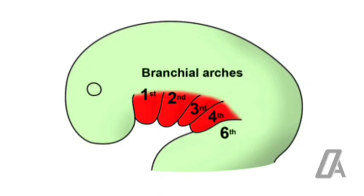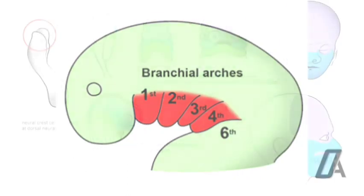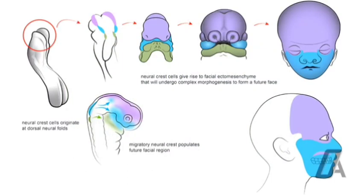The mandible is derived from the first branchial arch, which is called the mandibular arch. Branchial arches are bilateral mesodermal swellings that start developing at about the fourth week in utero.